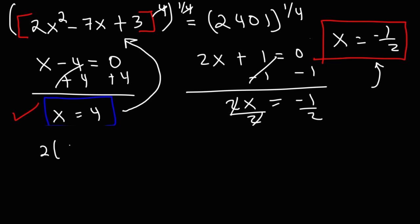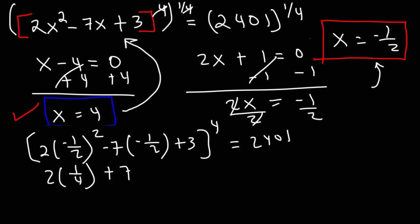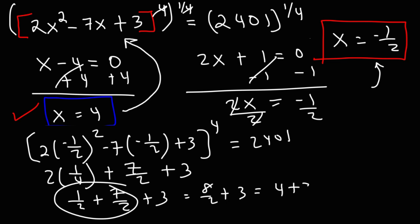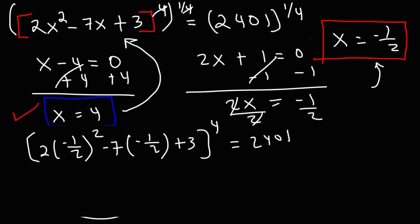Now let's see if our second solution is correct as well. So we're going to plug in negative 1 half. This is going to require some work. So negative 1 half squared: negative 1 squared is positive 1, 2 squared is 4, so we have 2 times 1 over 4. And then this is going to be plus 7 over 2, and then plus 3. Now 2 times 1 over 4, that's 2 over 4, which reduces to a half. So we have 1 half plus 7 over 2 plus 3. 1 over 2 plus 7 over 2 is 8 over 2, and 8 over 2 is 4. And 4 plus 3 is 7. So this is going to work as well. Everything inside of the brackets is equal to 7, and we know that 7 to the fourth is 2,401. So both answers are indeed correct.